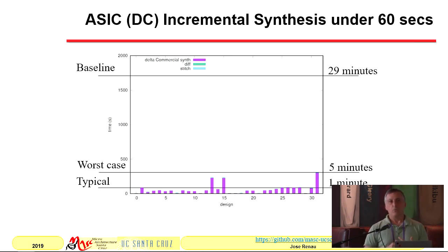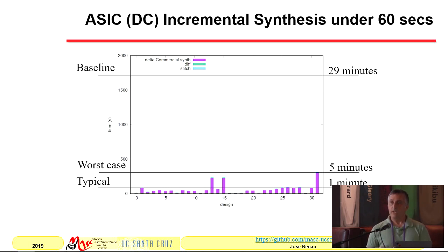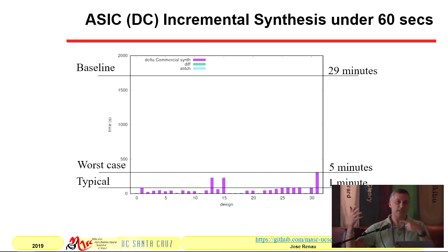The other thing we do is interface with commercial tools. This was with results before we ported things to C++; it was our Ruby base because we prototype many things in Ruby. Here we have a design where the baseline takes about 29 minutes to synthesize. Then we do many little code changes. Why are there so many bars? Because it depends whether you change various parts in your incremental code change. You synthesize and generate the netlist, pass a subsection of the netlist to Design Compiler, then stitch back the netlist. There was no quality-of-results degradation — the frequency was the same. And instead of 29 minutes, we're doing around one minute on average; in the worst case, five minutes. We were keeping Design Compiler as a daemon running in the background and sending netlists.